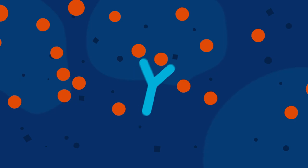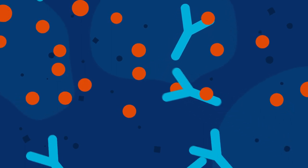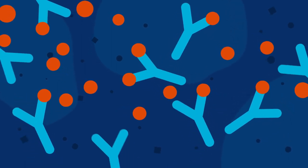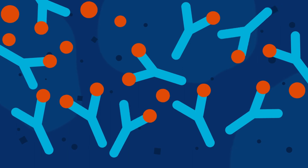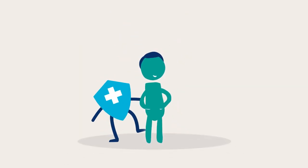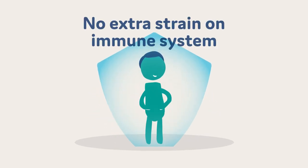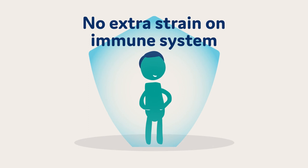Vaccines take advantage of the natural functions of your immune system, which is exposed to and fights off millions of pathogens every single day. The amount of pathogen in a vaccine is very small in comparison. So even when your child receives multiple vaccinations, it will put no extra strain on their immune system.